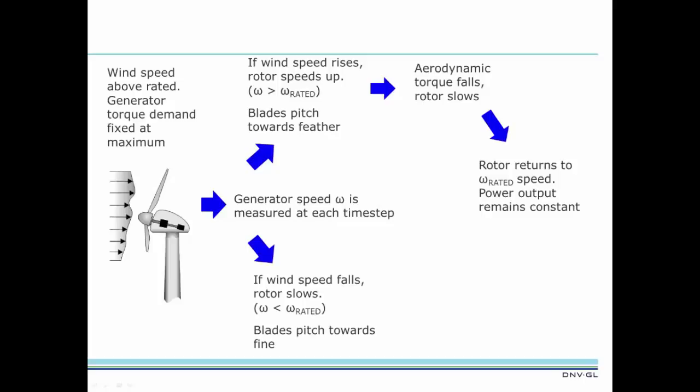Similarly, if wind speed falls and the rotor begins to slow down, the blades are pitched closer to fine pitch. This increases the aerodynamic torque, and the rotor speeds up. The rotor returns to rated rotor speed, again restoring constant power output.